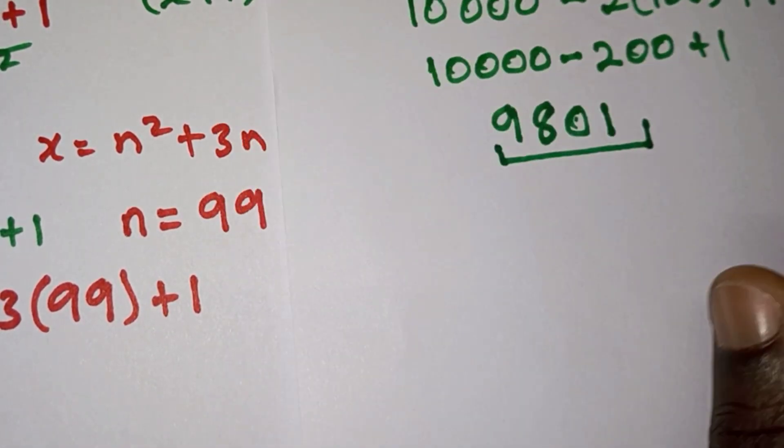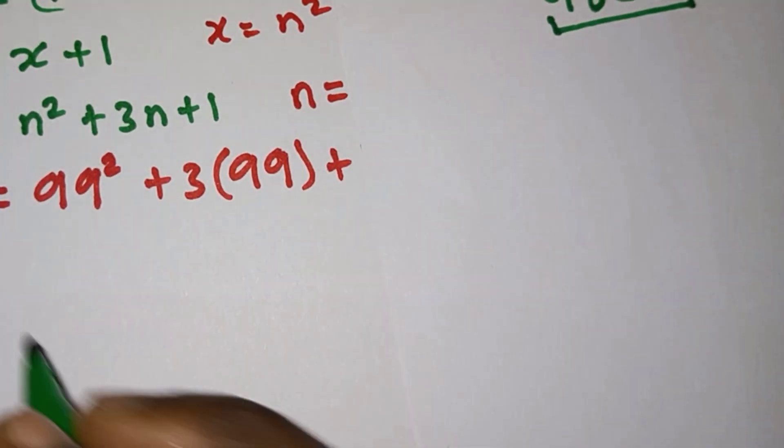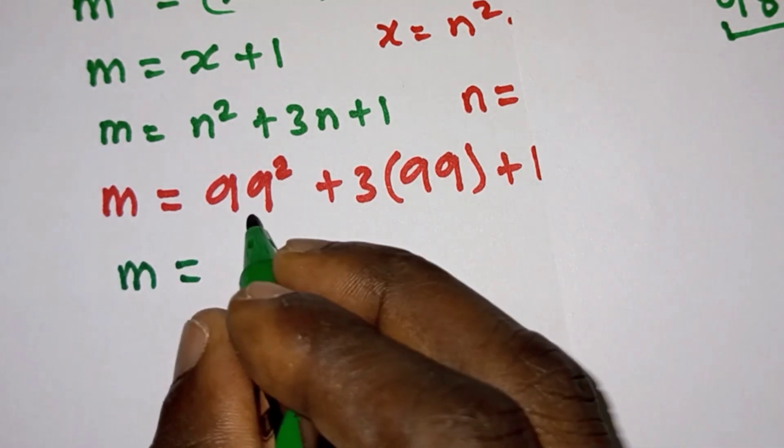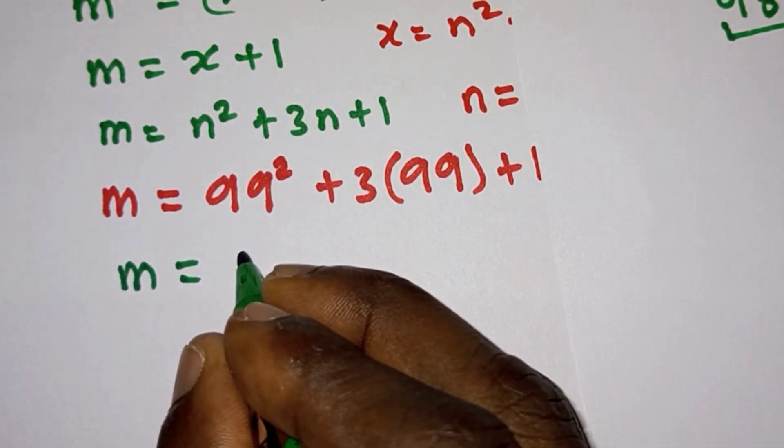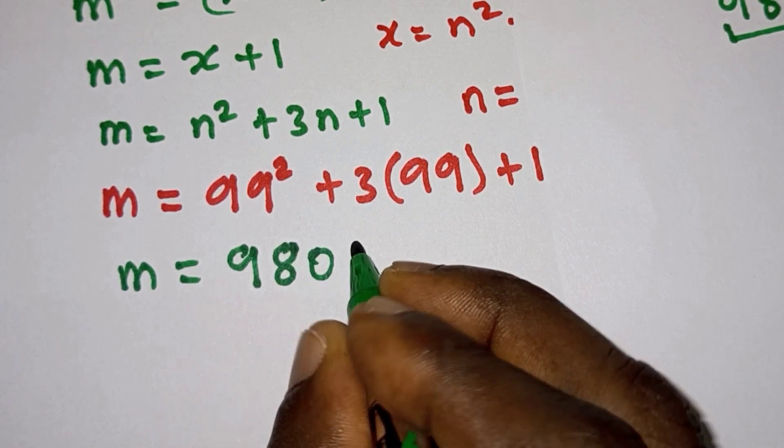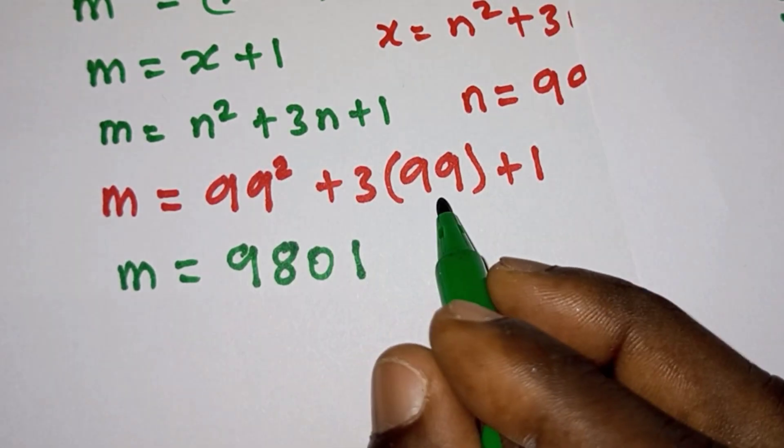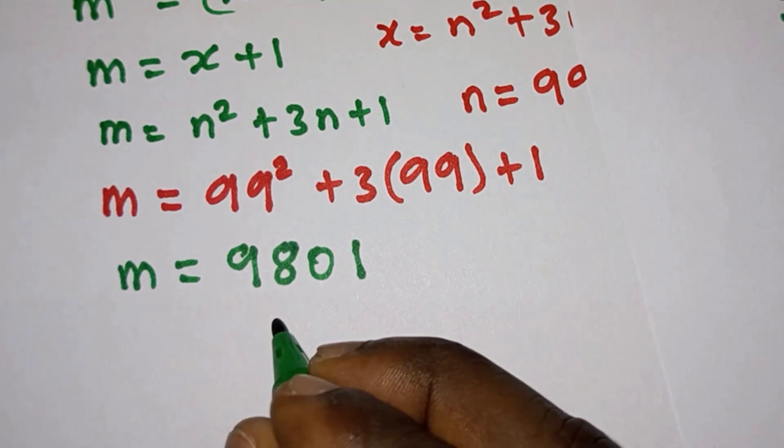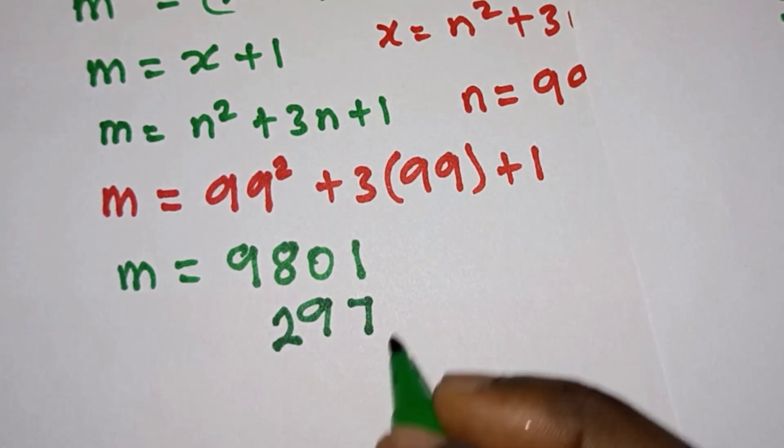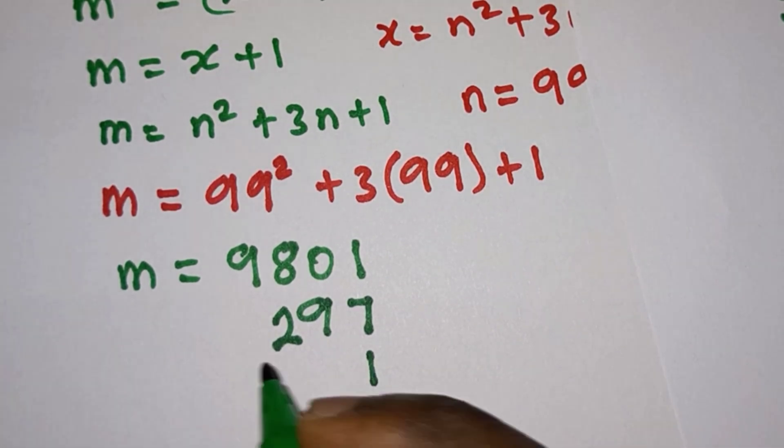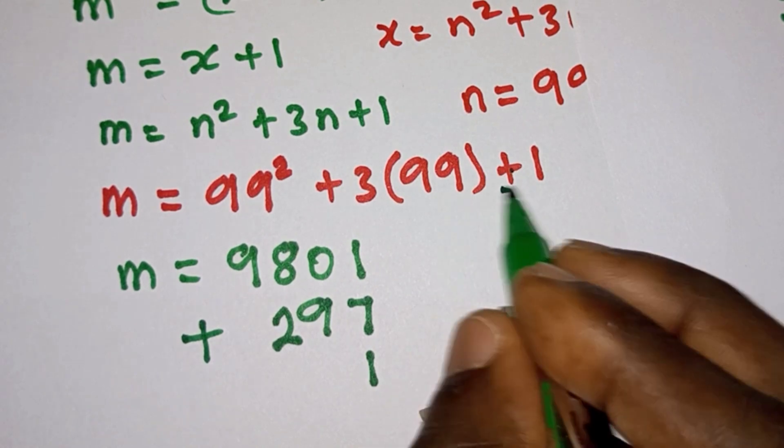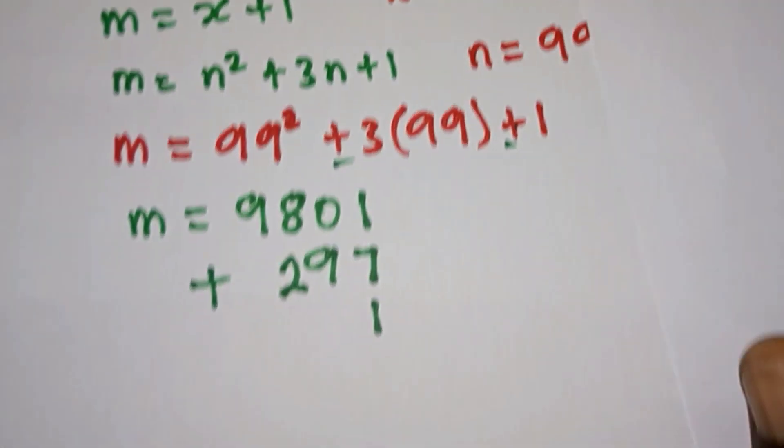So I'm gonna write it here. So we have m = 9,801, then 3·99, this is pretty much simple, it's gonna be 297, then we have +1. So I've brought this one here. Then let's sum them because we are adding them.